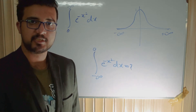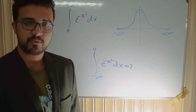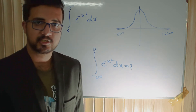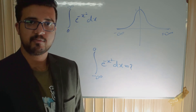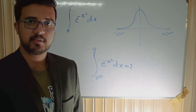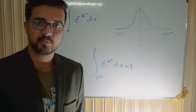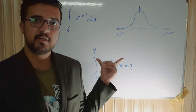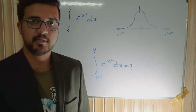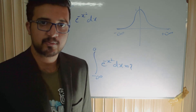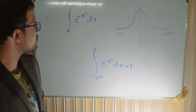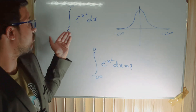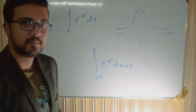Hello friends, welcome to my channel Mathematical Thought. Today we will talk about an integral which is known as the Gaussian integral, and from this integral we will see an interesting property — specifically a property of a Riemann integral. So let's start. This is our Gaussian integral from 0 to infinity.